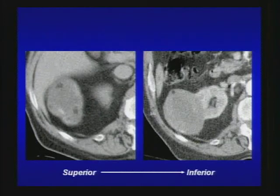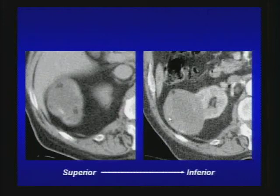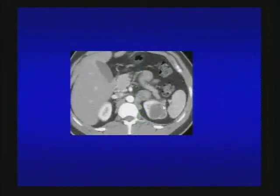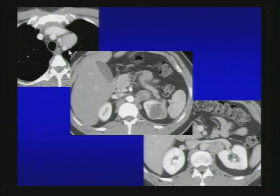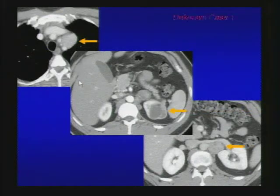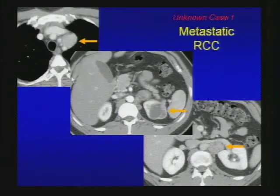Another practice case: a predominantly solid mass from the right kidney with a few dots of fat — you're not going to mistake this for angiomyolipoma. This is a predominantly solid enhancing mass — renal cell carcinoma until proven otherwise, fat-containing RCC. Here's a predominantly cystic lesion with solid enhancing component — looks like cystic RCC. But look for other findings: there's prevascular lymphadenopathy, a distant lymph node — this is a case of distant metastatic renal cell carcinoma. This is the answer to unknown case number one.